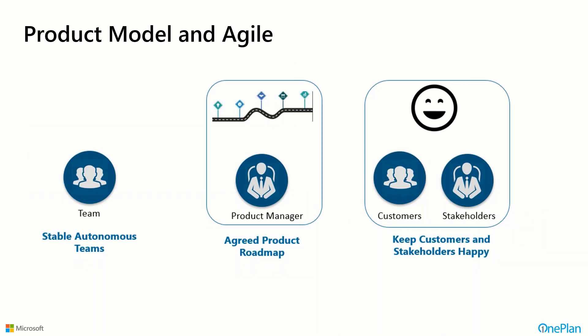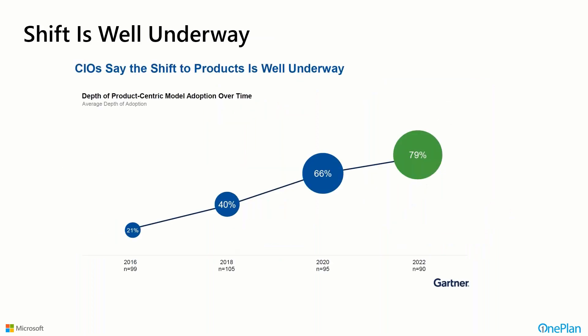In a product model, ideally you have stable autonomous teams that specialize in a particular product or product line. Product managers function within an agreed-upon product roadmap for their own product and understand how it fits with the overall set of products, enabling coordination and collaboration. The key is maintaining a customer focus — keeping customers and stakeholders happy and delivering value and quality. The Gartner Group surveys show an increasing percentage of organizations moving toward product orientation, especially as we move toward digital transformation.